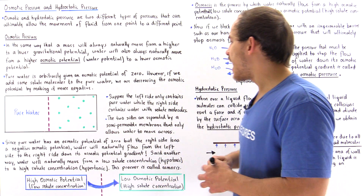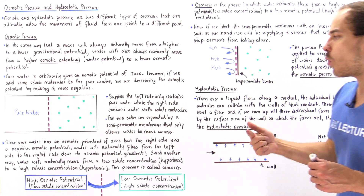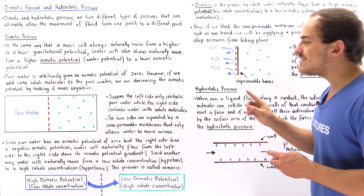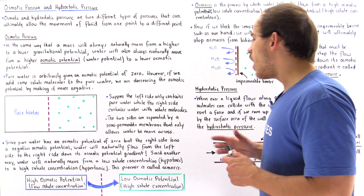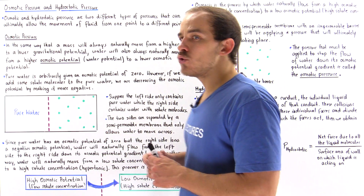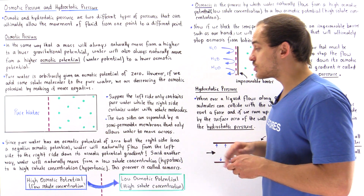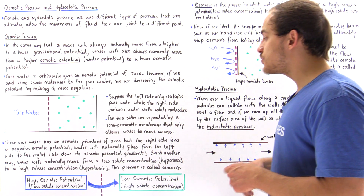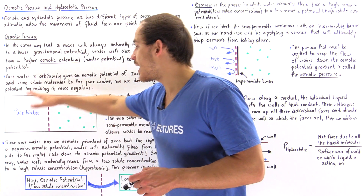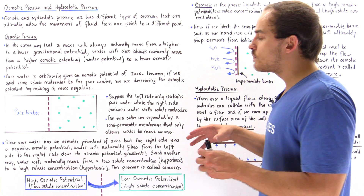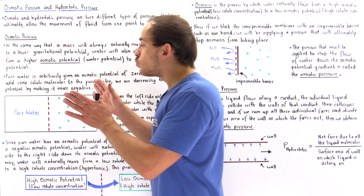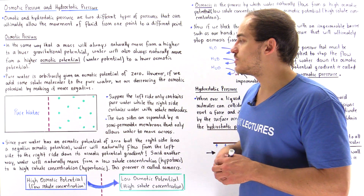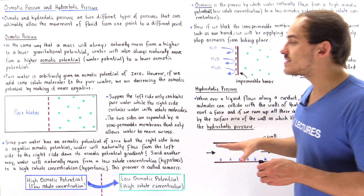The left side contains pure water while the right side contains water along with solute molecules shown in green, separated by a semi-permeable membrane that only allows water to move across. Since pure water has an osmotic potential of zero and the right side has a more negative osmotic potential, water naturally flows from the left to the right — from low solute concentration to higher solute concentration. This process is known as osmosis.